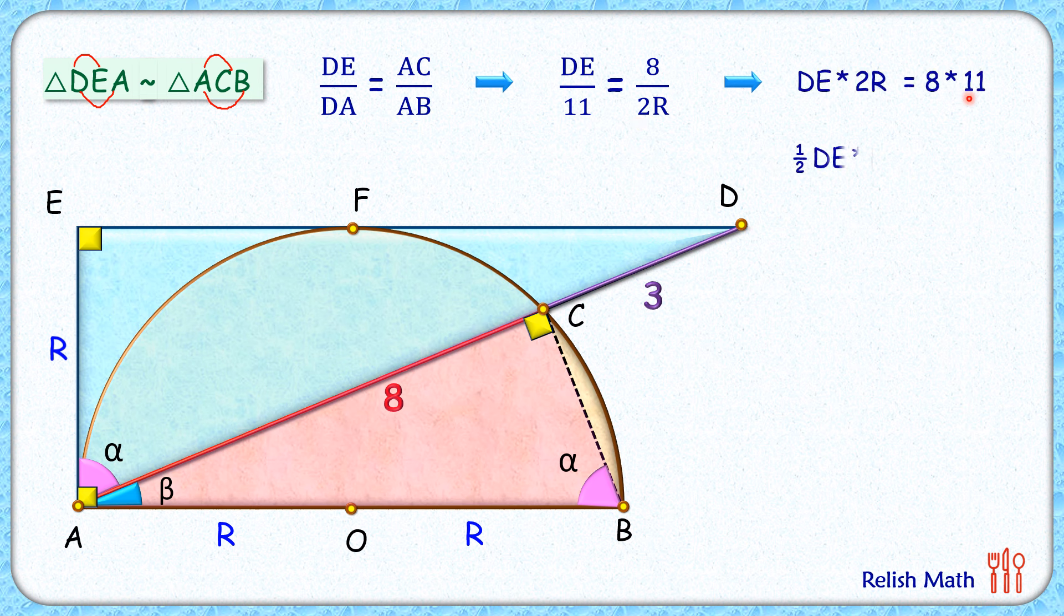Simplifying it by cross multiplication, we will get DE times 2R is 88. Dividing the full equation by 4, we will get half of DE times R is 22. Now DE is the height of the triangle and R is the base of the triangle. So half times base into height, that is your area, and thus area of this blue triangle is 22 cm square.